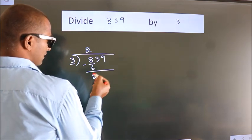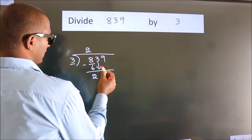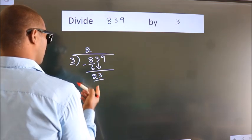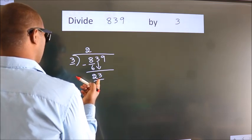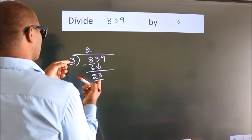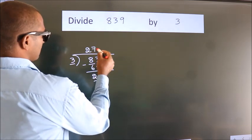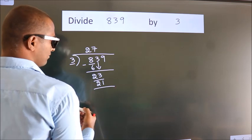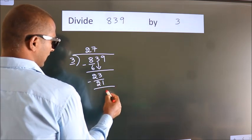After this, bring down the beside number. 3 down. So, 23. A number close to 23 in 3 table is 3 7s, 21. Now, we subtract. We get 2.